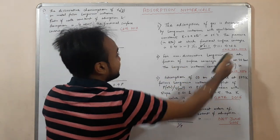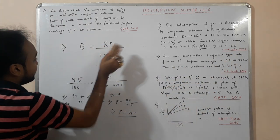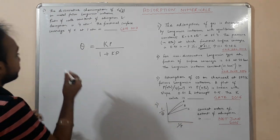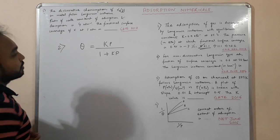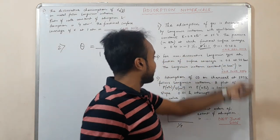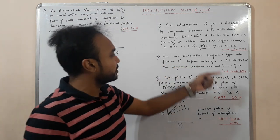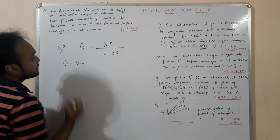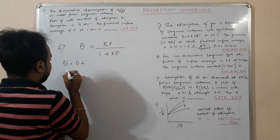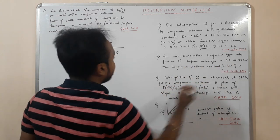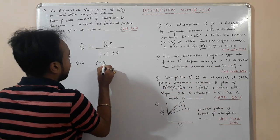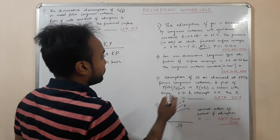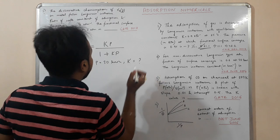The second one: for non-dissociative Langmuir type adsorption, fraction of surface covered is 0.6 at 30 bar pressure. We have given theta as 0.6, that is 6 by 10, and we have given the pressure as 30 bar. We have to find the K value.